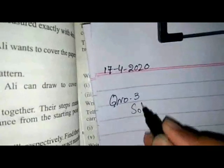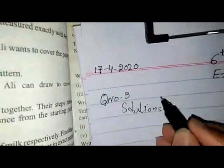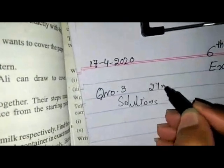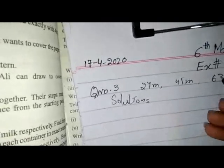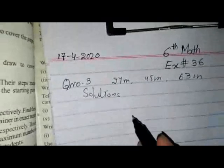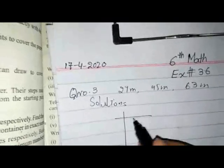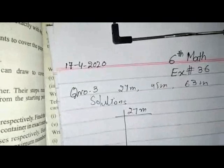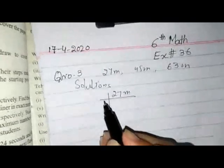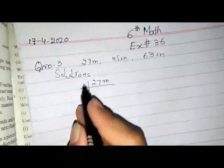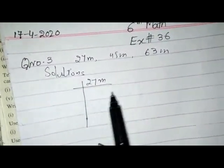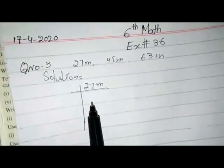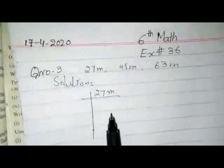The greatest measure of string will be equal to the HCF of these three numbers: 27 meter, 45 meter, and 63 meter. We can find the HCF by using any method — division method, long division method, prime factorization method. Here I am using the prime factorization method.